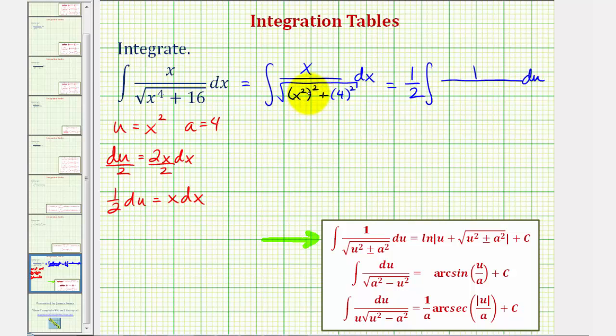Our denominator is going to be the square root of x squared to the second, which would be u squared, which is perfect. And then plus four squared, which would be plus a squared.